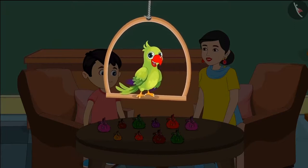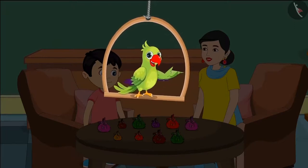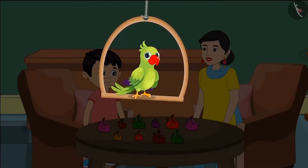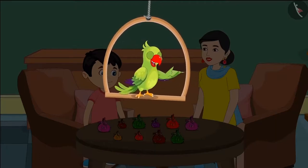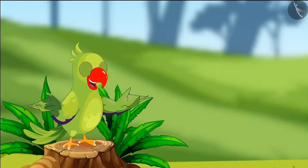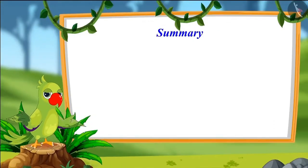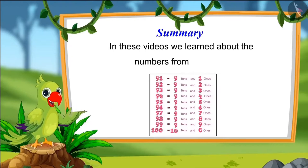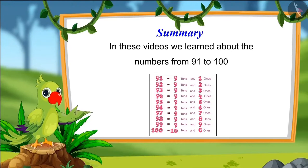Children, did you see what mistake Chotu made? You all should not make such a mistake. We should keep this in mind while making groups of ten and counting — that each group is made up of ten things. Groups made up of a different number of things are not counted as tens. So children, that was all for today. In these videos we learned about numbers from 91 to 100. I hope you have understood this topic properly. Bye friends!